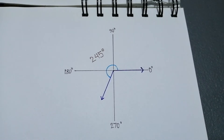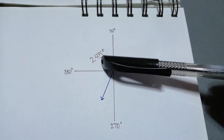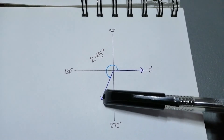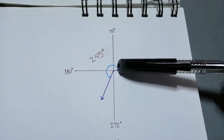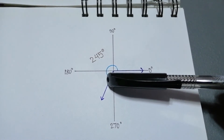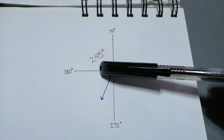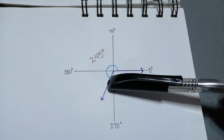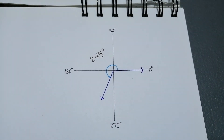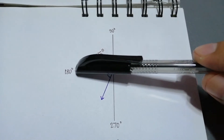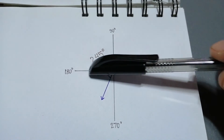For our next example, we have here an angle equivalent to 245 degrees. This is our initial side and this is the terminal side of our angle. If the terminal side moves counterclockwise, it forms a positive angle and it is equivalent to 245 degrees. Our terminal side is in the third quadrant — it is already beyond the negative x-axis, or it exceeded 180 degrees.